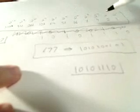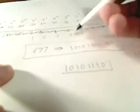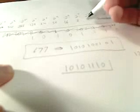What we do is very simply, we know where the placeholders are, and we're going to easily convert them. So, 128 we're going to use, we won't use 64, we'll use 32, 16 we won't use, we will use 8, we will use 4.